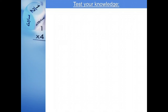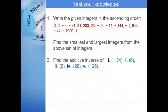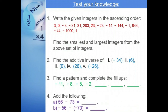To test your knowledge, here is a small exercise. Children, please do the following exercise in a notebook made from the remaining pages of the previous class notebook. Question 1: write the given integers in ascending order — from smallest to biggest — then find the smallest and largest integers from that set. Question 2: find the additive inverse of the following numbers; for example, the additive inverse of minus 34 is 34. Question 3: find a pattern and complete the fill-ups for the given numbers. Question 4: add the following — 56 minus 73 equals dash.